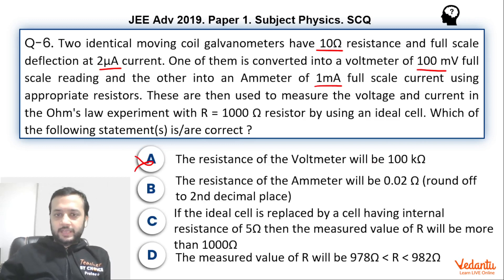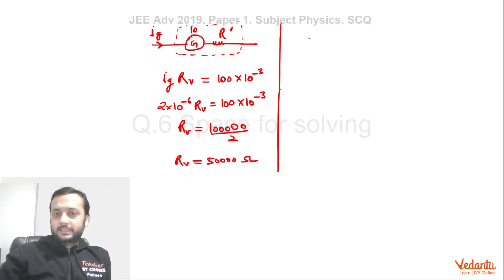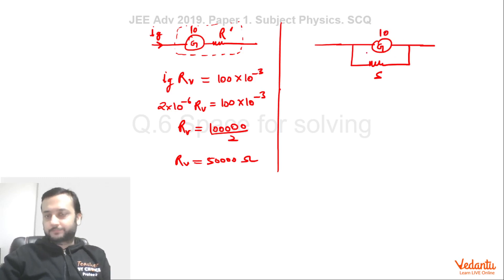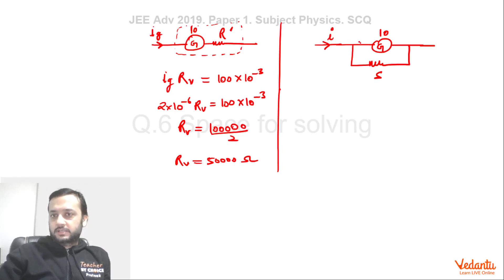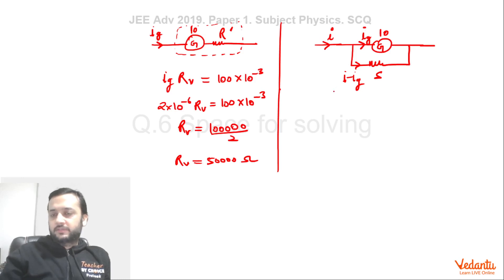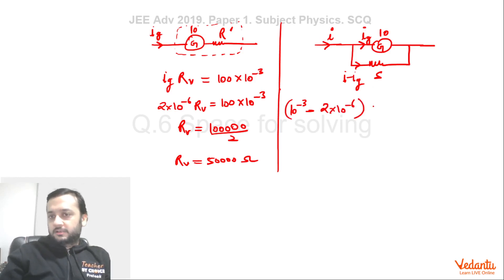Now for the ammeter resistance. A galvanometer with a very small shunt resistance in parallel forms an ammeter. The galvanometer has 10 ohms resistance. When the maximum current I of 1 milli-ampere flows in, IG goes through the galvanometer and (I − IG) goes through the shunt. So: (1 × 10⁻³ − 2 × 10⁻⁶) × shunt = 2 × 10⁻⁶ × 10.